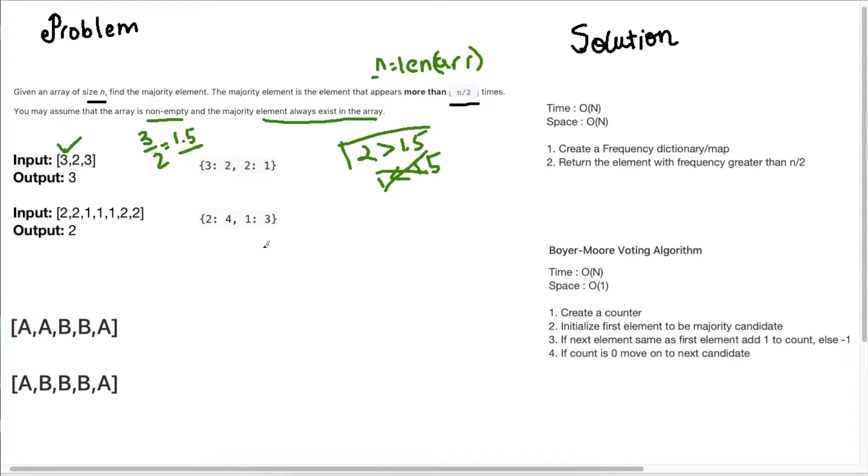The first solution that immediately came to my mind when I saw this problem was to create a dictionary and map all the frequencies of each element. So here we have 3 and 3 occurs twice. So we can say its frequency is 2 and then 2 occurs 1 time. So its frequency is 1 and then iterate over this map and check for the condition. So we will just check the values and see if it is greater than our threshold, which is in this case 1.5.